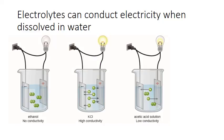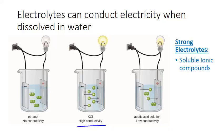Electrolytes are substances that can conduct electricity when dissolved in water — that's where the name comes from. This middle beaker is what's called a strong electrolyte; it contains the ionic compound potassium chloride dissolved in water. The dissociated potassium and negatively charged chloride ions are able to carry current through water because they move freely and independently of each other. A strong electrolyte includes soluble ionic compounds that dissolve readily and produce many ions, as well as strong acids, which dissociate completely in water to produce hydrogen ions and anions.